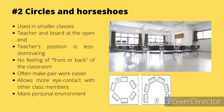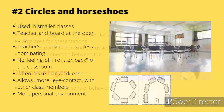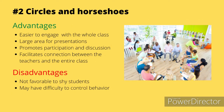Number two: circles and horseshoes. They are often used in smaller classes where the teacher and board are situated at the open end of the arrangement. The teacher's position is less dominating and there is less of a feeling that the student is at the front or back of the classroom. This often allows students to be more focused on the lesson. These arrangements often make pair work easier and allow students to have eye contact with all other class members. The classroom in effect becomes far more a personal environment.